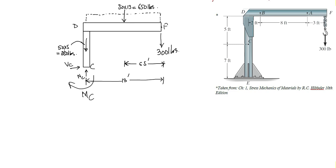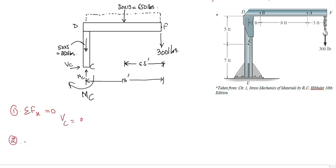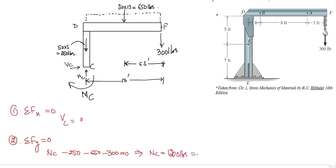The unknowns NC, VC, and MC can be determined by applying the conditions of equilibrium. The first condition — summation of forces in the x-direction equal to zero — gives VC. As there is only VC in the x-direction, VC equals zero. Applying the second condition — summation of forces in the y-direction equal to zero, upward forces positive — NC acts upward (positive), while 250 pounds, 650 pounds, and 300 pounds all act downward (negative). From this, NC equals 1,200 pounds, or 1.2 kips.